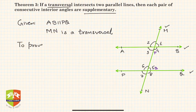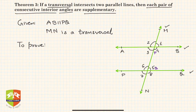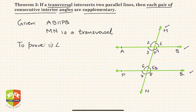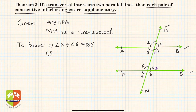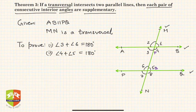To prove: each pair of consecutive interior angles. The consecutive interior angles are angle 3 and angle 6, and angle 4 and angle 5. We have to prove that angle 3 plus angle 6 equals 180 degrees, and angle 4 plus angle 5 equals 180 degrees.